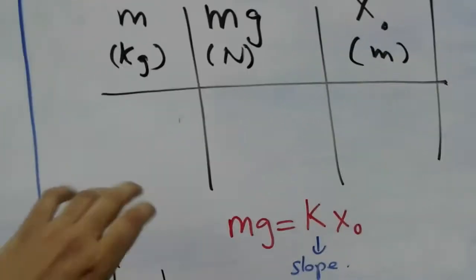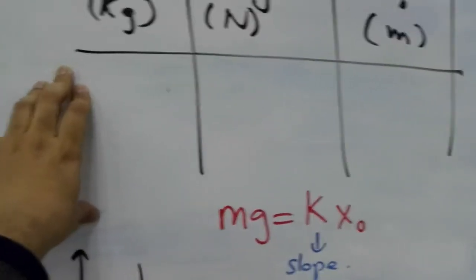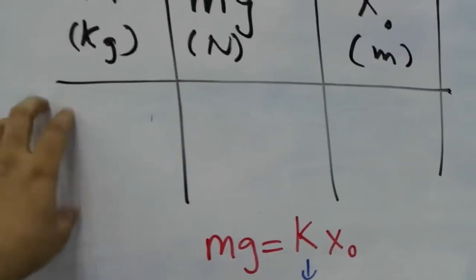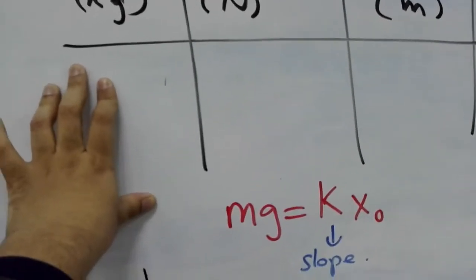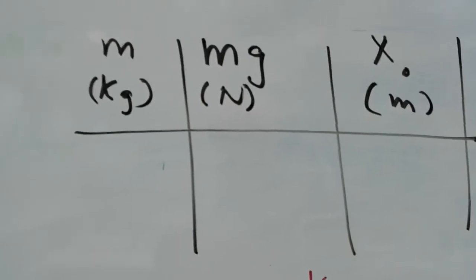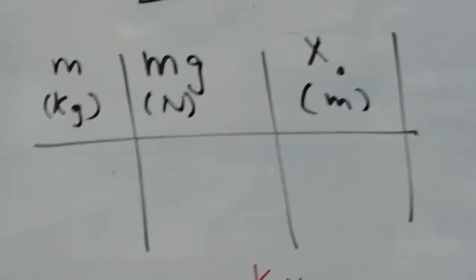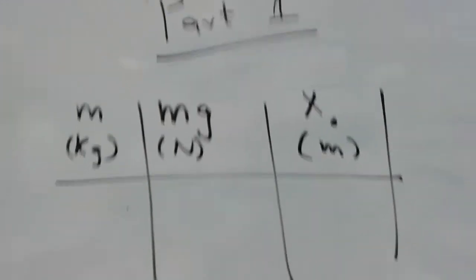You're gonna measure the mass. The mass won't be given to you. You have to measure the mass of those hanging masses, and then you multiply that with G to get the weight, because weight is mass times gravity. So you'll make a table in which the third column is the extension of the spring.